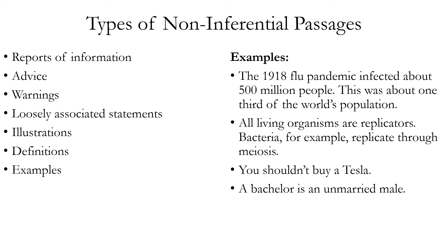Let's go through some specific examples. The 1918 flu pandemic infected about 500 million people — about one-third of the world's population. That is a report of information. Whether the claims are true or false, they don't try to prove one claim based on others, so it's not an argument. Another example: all living organisms are replicators. Bacteria, for example, replicate through meiosis. Also a report of information with no inferential claim.